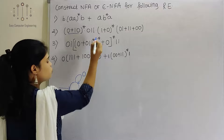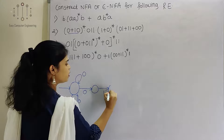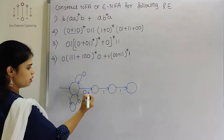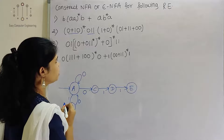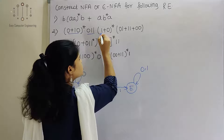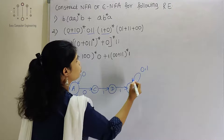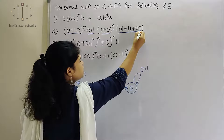Next is the concatenation with 011: we go 0, then 1, and again 1. We will give names to every state. After 011 there is a concatenation with (1+0)*, so we show 0 and 1 with a star loop.